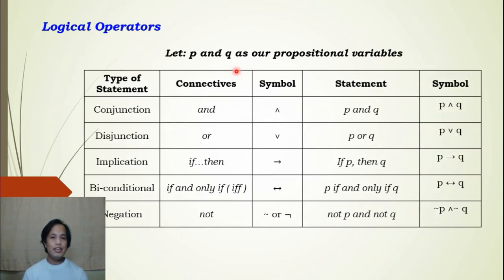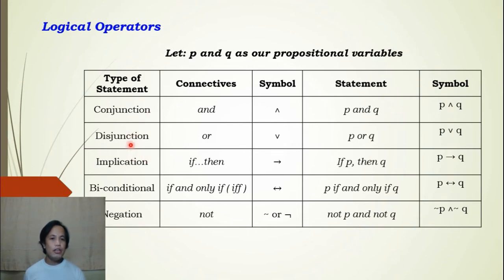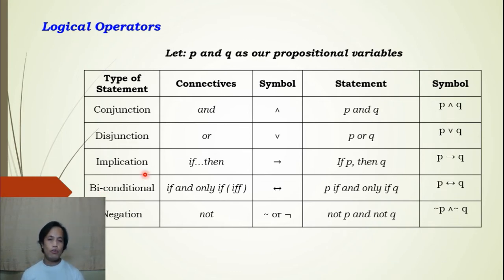Let us look at this table. In the first column, we have the types of statements: conjunction, disjunction, implication, biconditional, and negation. Implication is also called conditional, or an if-then statement.